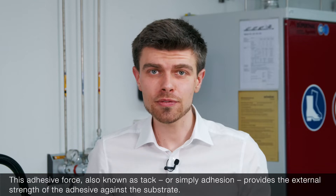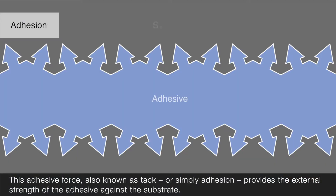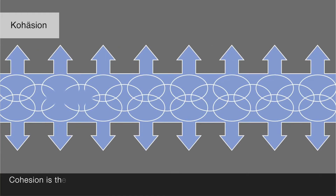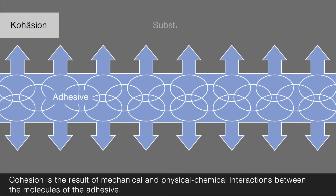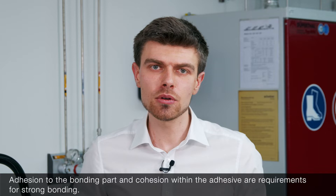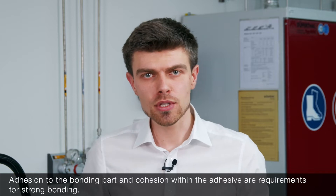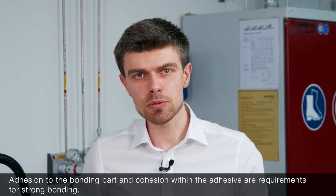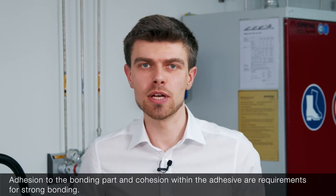This adhesive force, also known as tack, or simply adhesion, provides the external strength of the adhesive against the substrate. Cohesion is the result of mechanical and physical-chemical interactions between the molecules of the adhesive. Adhesion to the bonding part and cohesion within the adhesive are requirements for strong bonding.